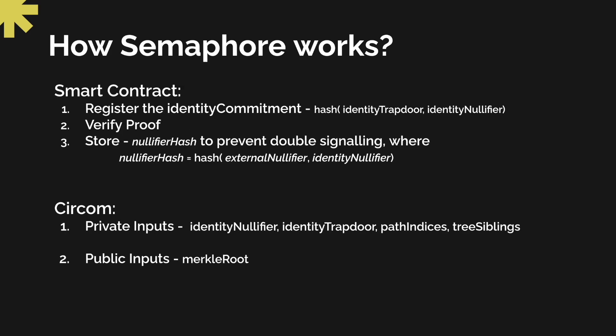Let's see how this works with respect to implementation. There are certain things we will achieve using smart contracts and certain things using circuits. On the smart contract side, the user will first have to register themselves — not exposing their identity, but just the hash of the identity. We will also use smart contracts to verify the proof and store the hash of the signals so they cannot be reused — each signal can only be used once.